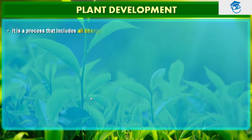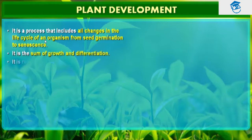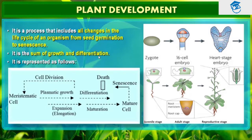Development is a process that includes all the changes in the life cycle of an organism from seed germination to senescence. Senescence is cell death. Plant development is the sum of growth and differentiation.